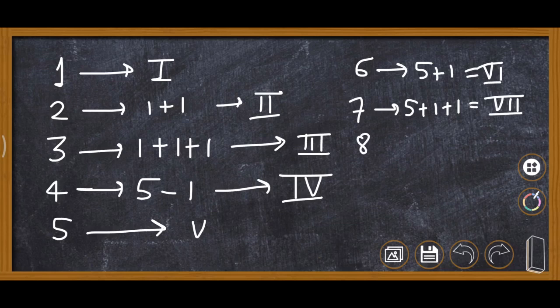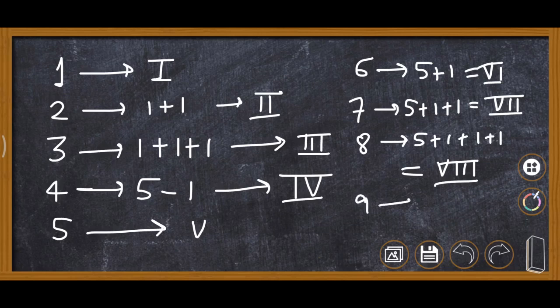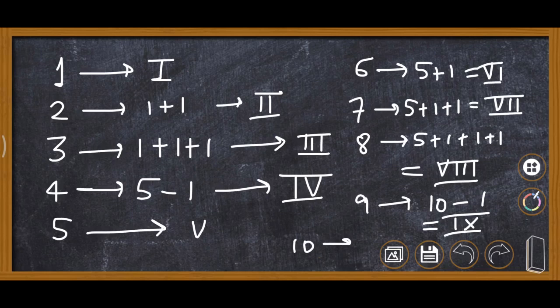For 8, it is 5 plus 1 plus 1 plus 1, so it becomes VIII. For 9, we cannot write 5 plus four 1s because repeating 4 times is meaningless, so we write it as 10 minus 1, which gives IX — I comes first, then X. And 10 is written as X.